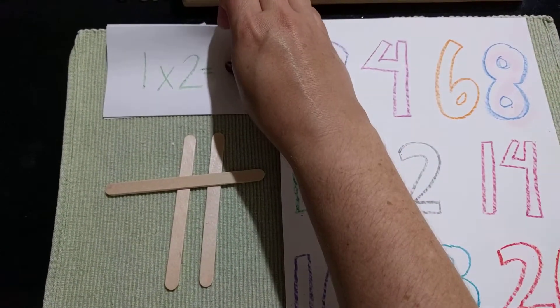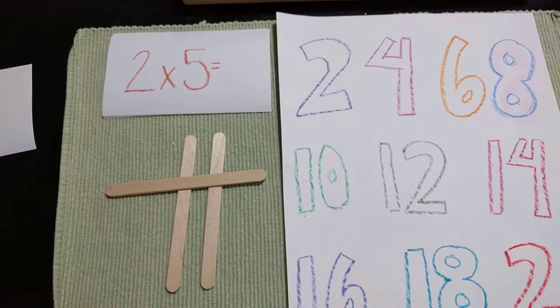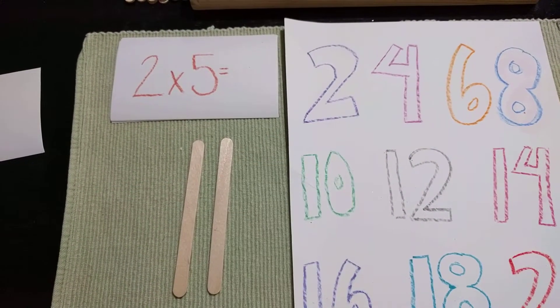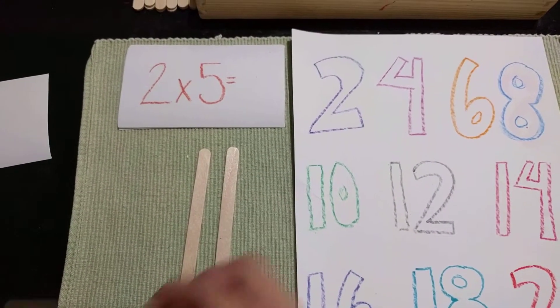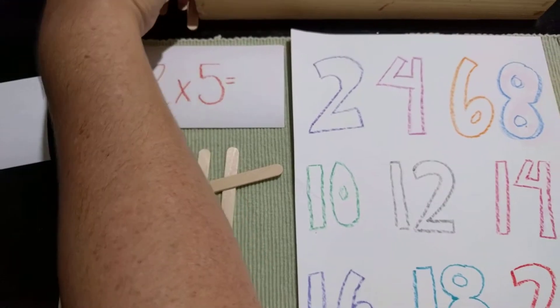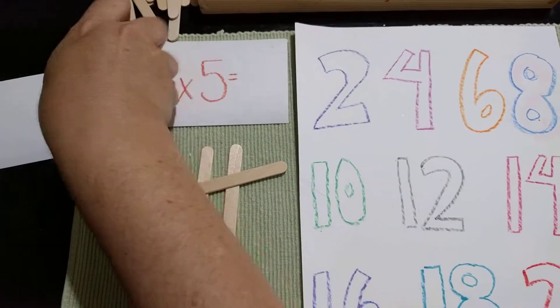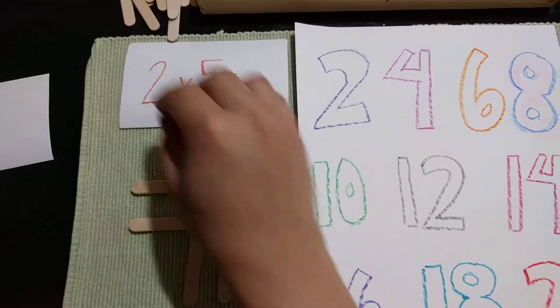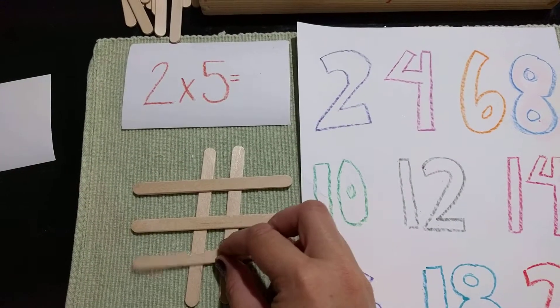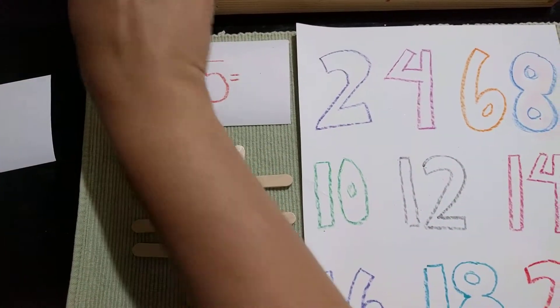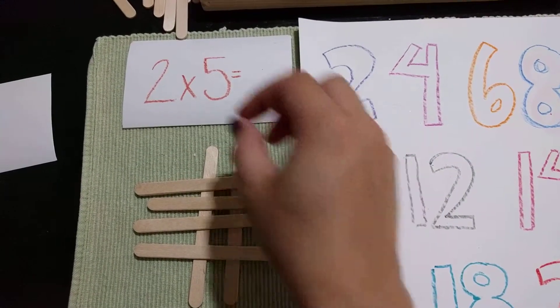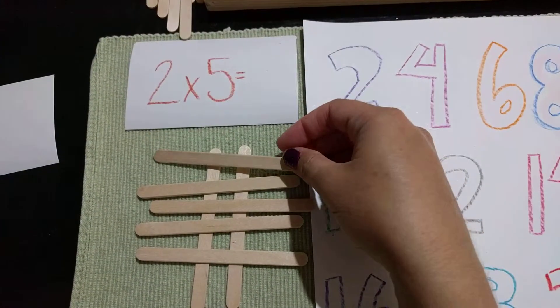Let's see what our next problem is. 2 times 5. So here's 2 times 1. 2, 3, 4, 5.